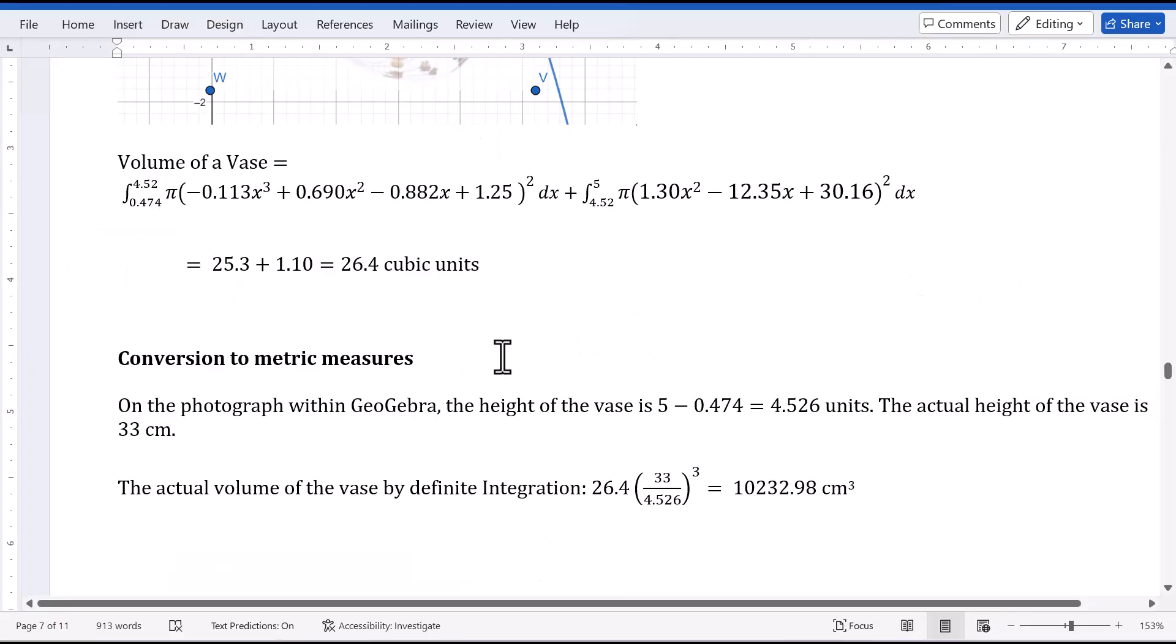We need to convert it to metric measures. Since the height of the vase in the photograph is 5 minus 0.474 equals 4.526 units, I measured the actual height of the vase. It's 33 centimeters.